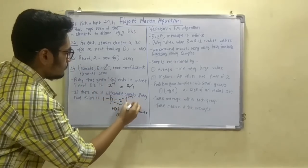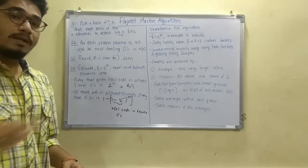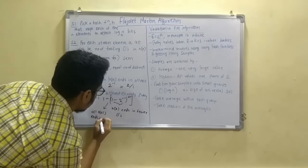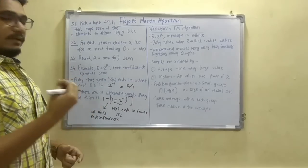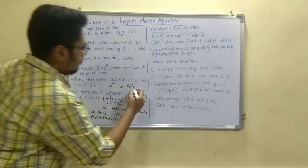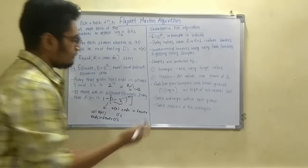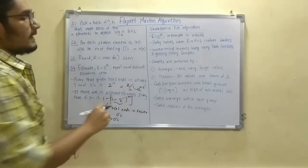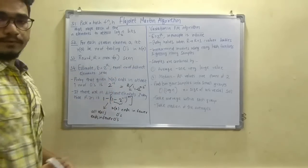And the entire expression (1 minus 2 raised to minus i) raised to m is the probability that all H values end in fewer than i zeros. We can simplify this further: since the value of 2 raised to minus i is very small, we can write it as 1 minus e raised to (minus m times 2 raised to minus i). By using Taylor's expansion series we can solve it further.